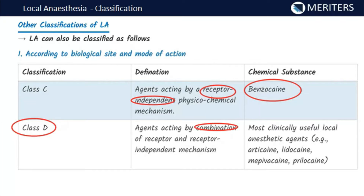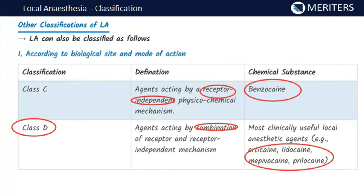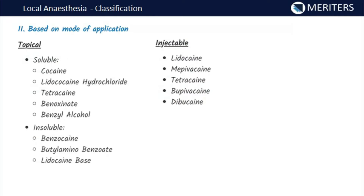Class D includes most of the clinically useful local anesthetic agents, acting by a combination of both receptor-dependent and receptor-independent mechanisms. Examples include articaine, lidocaine, mepivacaine, and prilocaine. This is another potential exam question — agents acting by combination mechanism fall in Class D.